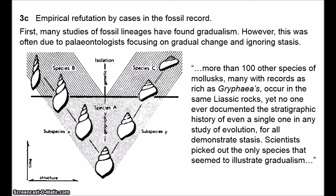Nobody bothered recording stasis because stasis wasn't interesting — it was seen as showing that fossil records are incomplete, not demonstrating evolution. So we have to be very careful when looking at paleontological research, especially from before the 1970s. There are many cases of gradualism, but these gradualistic lineages may be standout examples in rocks where 90, 95, even 99% of other lineages display stasis.